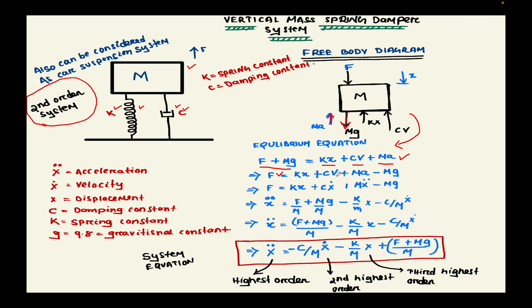Solving the equation over time, if we have velocity then we can represent it with the help of x dot. If we have acceleration we can represent it with the help of x double dot, and displacement will be represented with the help of x.